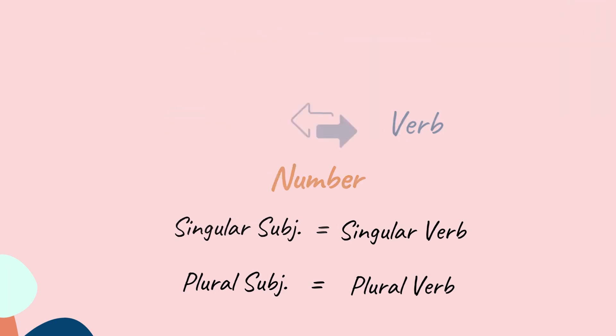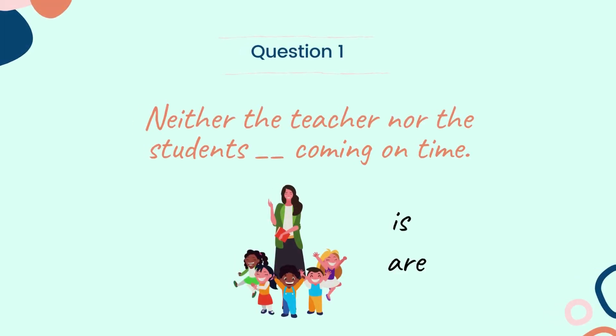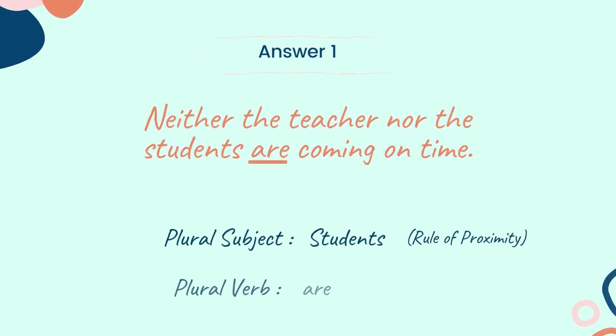Now let's start with the questions. Question 1: 'Neither the teacher nor the students dash coming on time.' Choose the correct verb between the two words: is or are. And the answer is: Neither the teacher nor the students are coming on time. Here the sentence contains 'nor' and the subject after 'nor' is 'students', which is plural in form. So the verb will be 'are'. This is the rule of proximity.